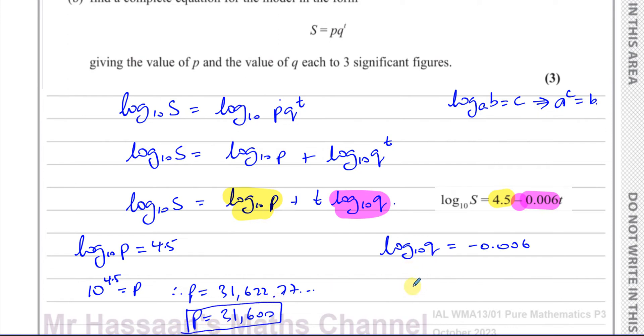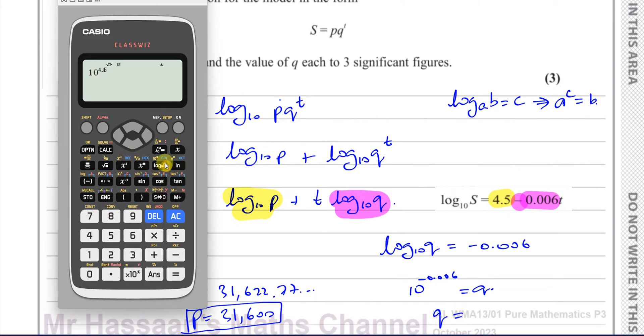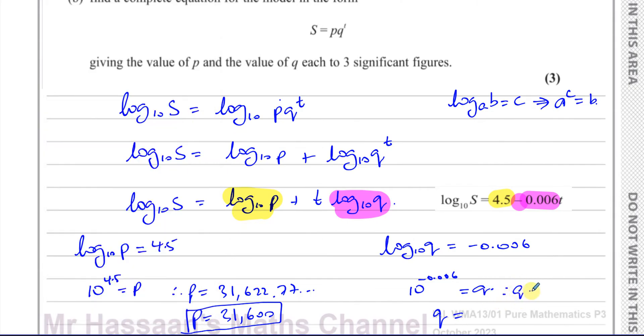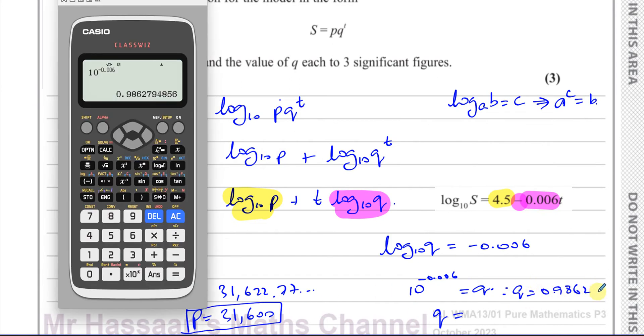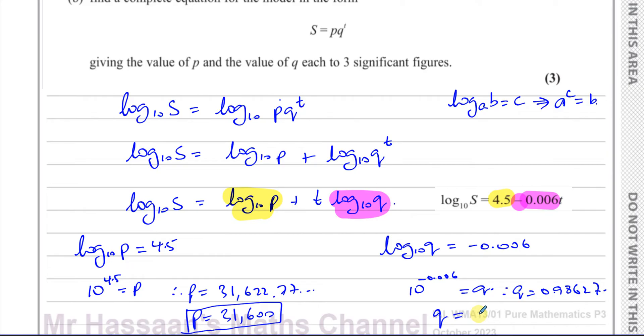And q, similarly, we can say 10 to the power of negative 0.006 equals q. So q is going to equal 10 to the power of negative 0.006, and that gives us 0.98627 continues on. So 3 significant figures, that's going to be 0.986. So there's the value of q and the value of p.